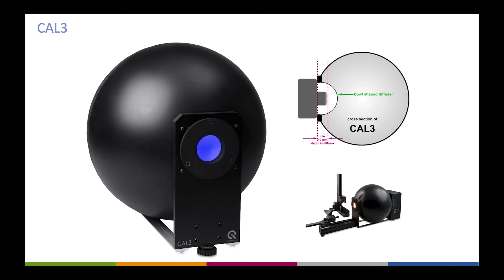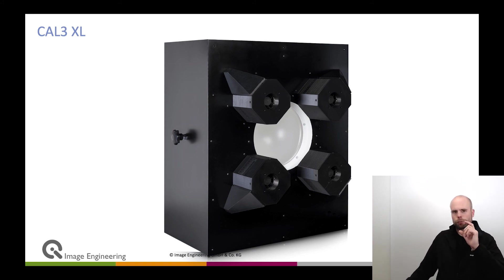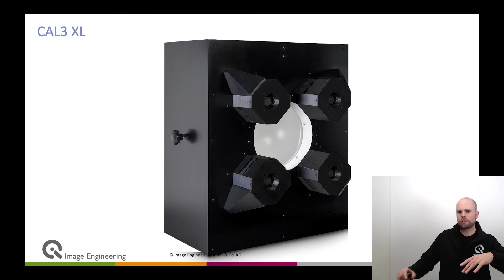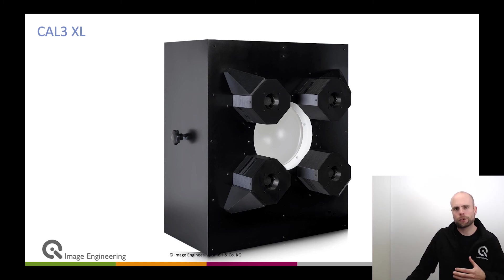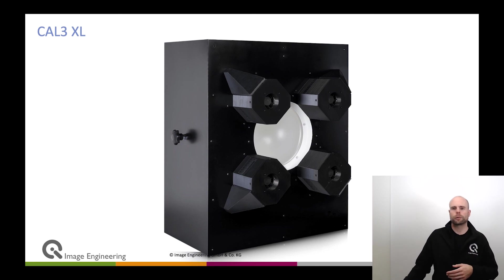Many customers see the Cal 3 and say it's exactly what they were looking for. However, some cameras cannot fit through the relatively small opening of the Cal 3, which is why we have the Cal 3 Extra Large. Depending on the diameter of the front lens or whether the device is attached to a board or larger housing, the Cal 3 Extra Large is your solution. It has more than 20 centimeters of opening, giving you plenty of space to place your camera right inside the diffuser.